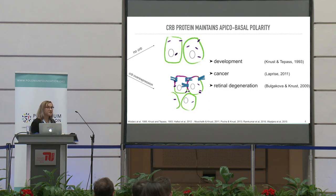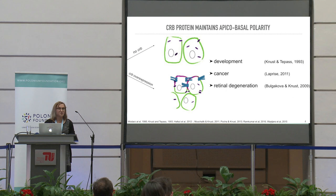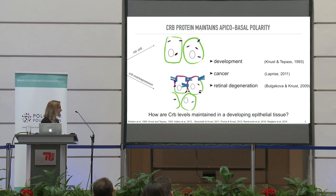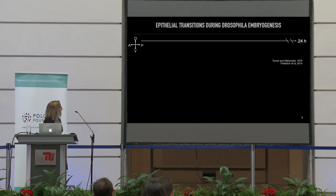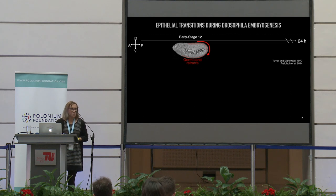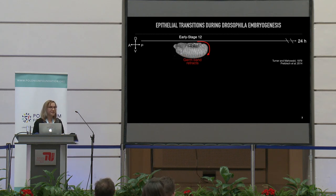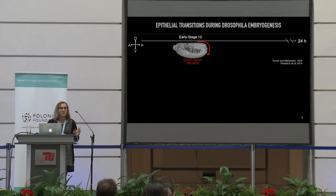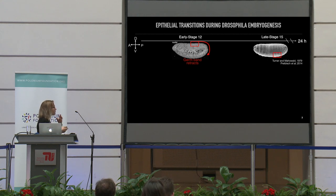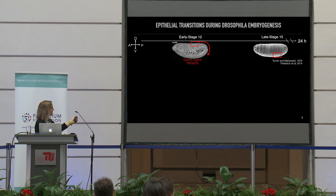That was the motivation for us to look at how this protein is regulated in the physiological situation during morphogenesis, where there is a lot of remodeling of the tissue. We use the Drosophila embryo to study embryogenesis. The reason is that the whole development is very fast — it takes only 24 hours — and we can look at highly dynamic morphogenetic events that happen during the first 12 hours of development. Here you can see a very early stage when there is a lot of tissue movement.